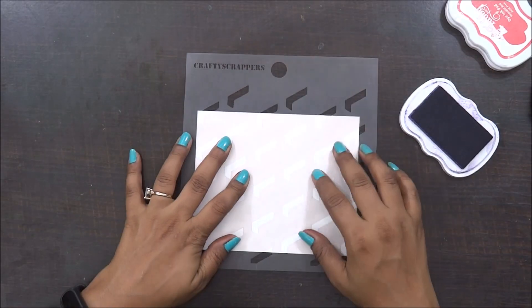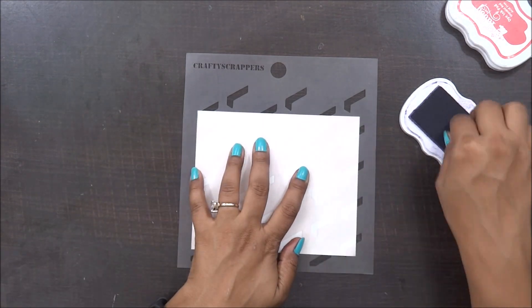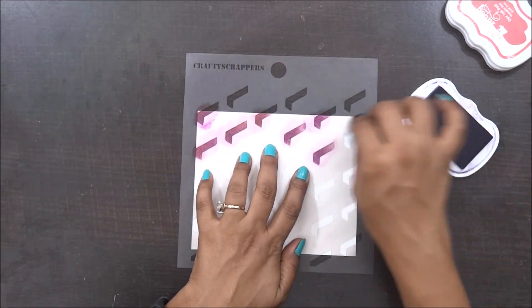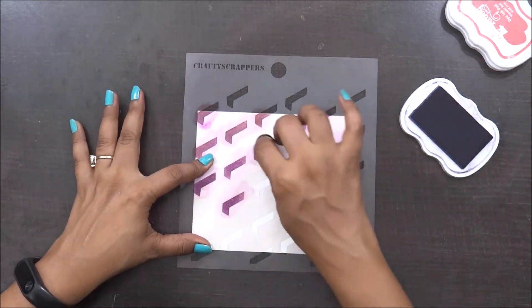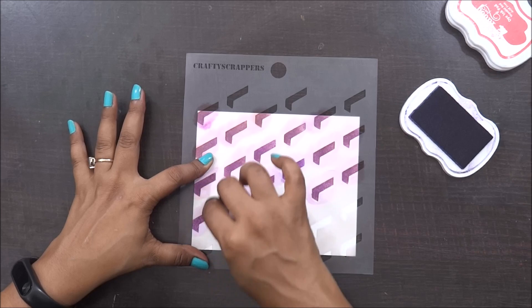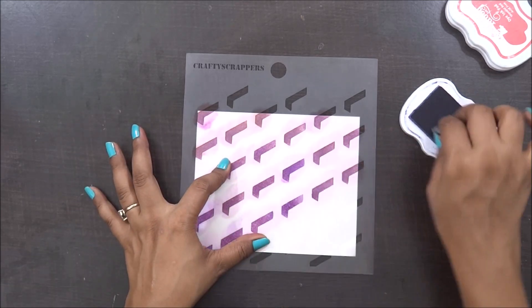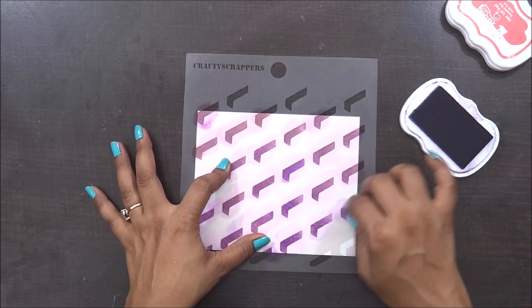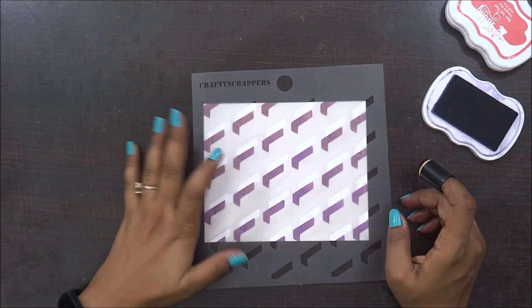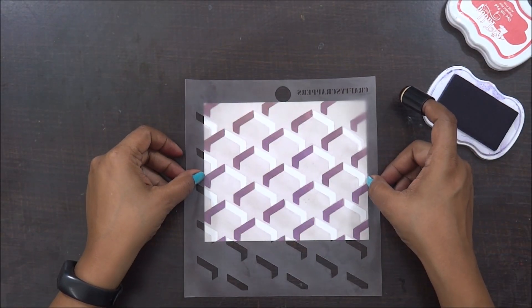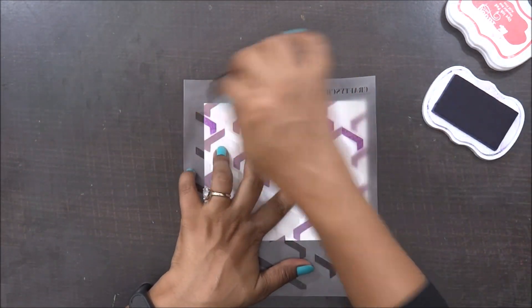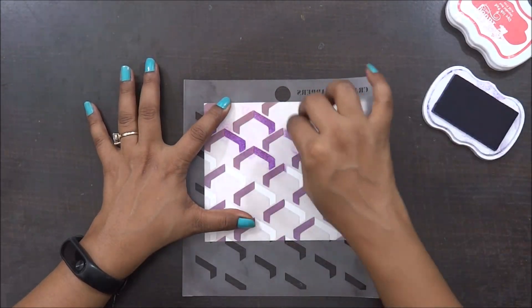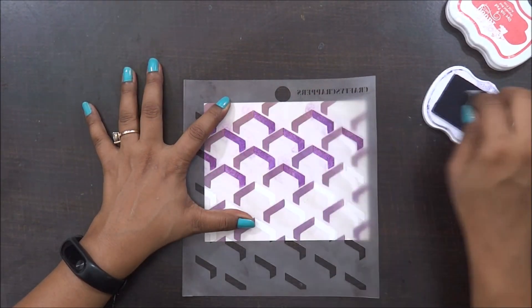This one is one of my favorite patterns. Here again I'm using the same stencil set and I'm just going to turn it, turn it, turn it, and create a beautiful diamond design. Working with this stencil set and creating your own background, your own design, is unlimited. You can just play around with different colors, twist and turn your stencil, and create beautiful patterns.